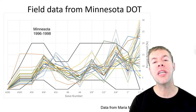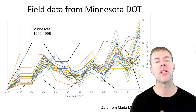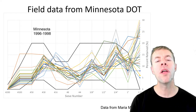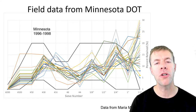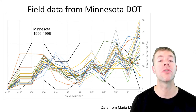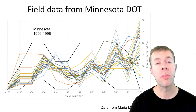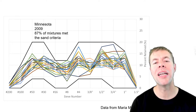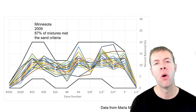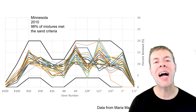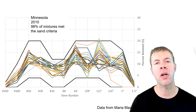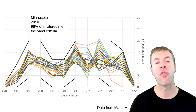The Minnesota DOT started to go to something called optimized graded concrete, trying to better pay attention to their aggregations. When they started between 1996 and 1998, their mixtures and the contractors' mixtures were all over the place on the tarantula curve, and the performance of these concretes was also all over the place. But over time, by 2009, 87% of the mixtures were falling within the tarantula curve. By 2010, over 98% of the concrete mixtures contractors were producing fell within the tarantula curve, and they were getting better and better performance every year.